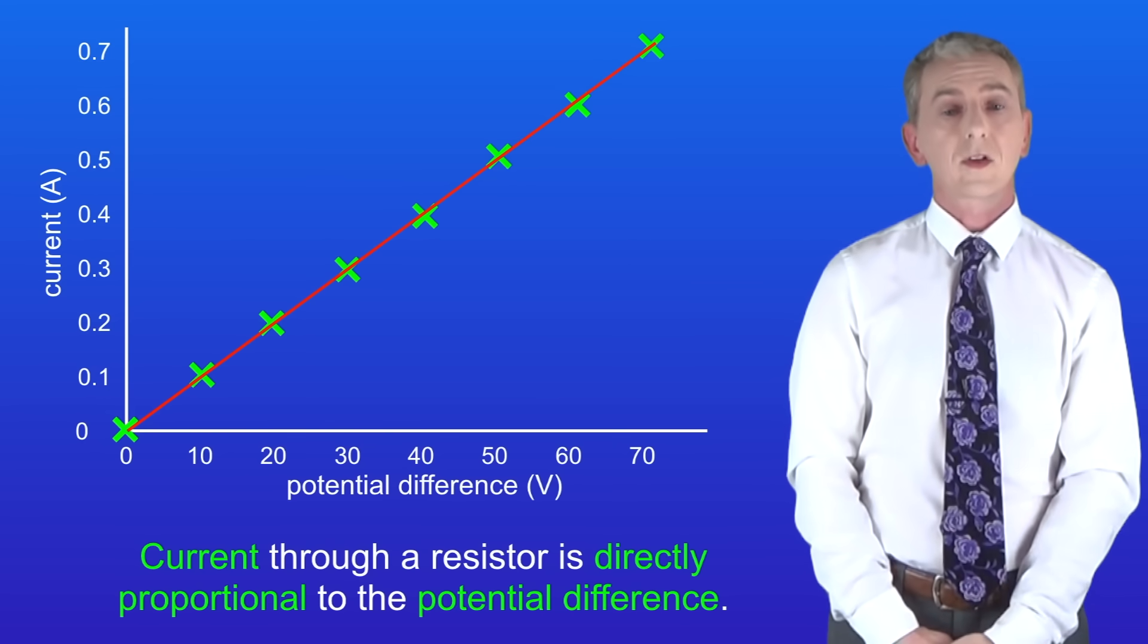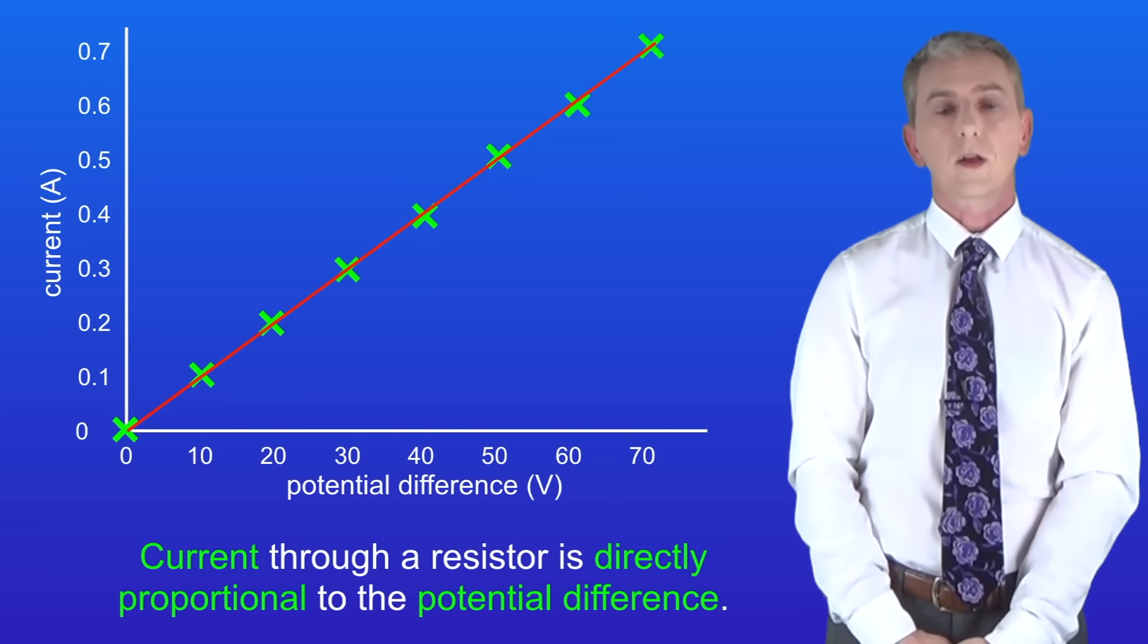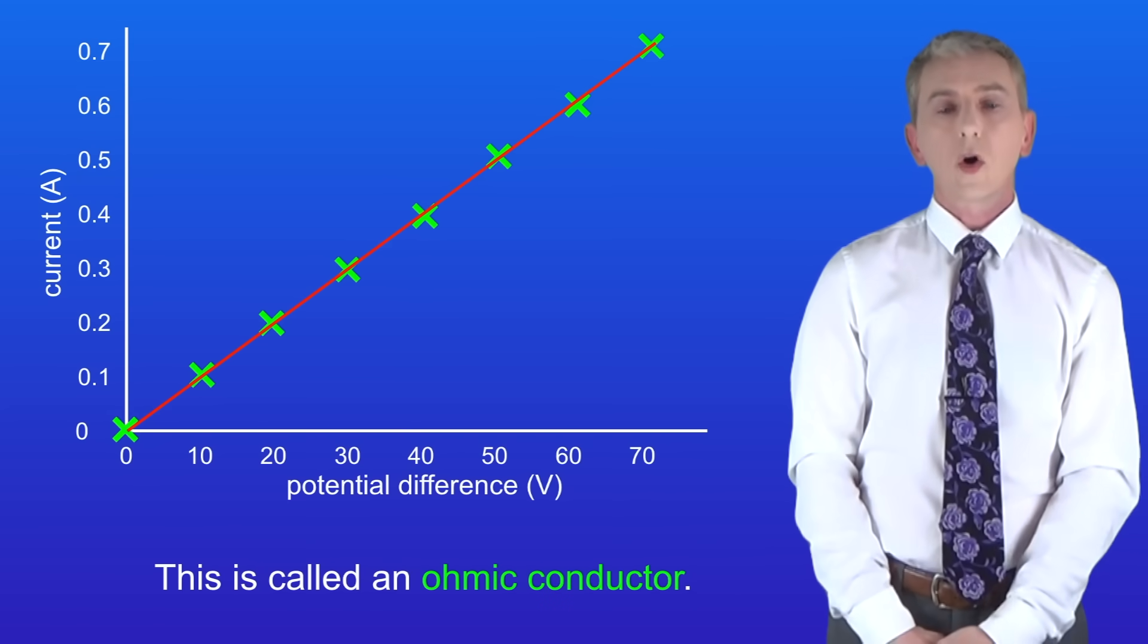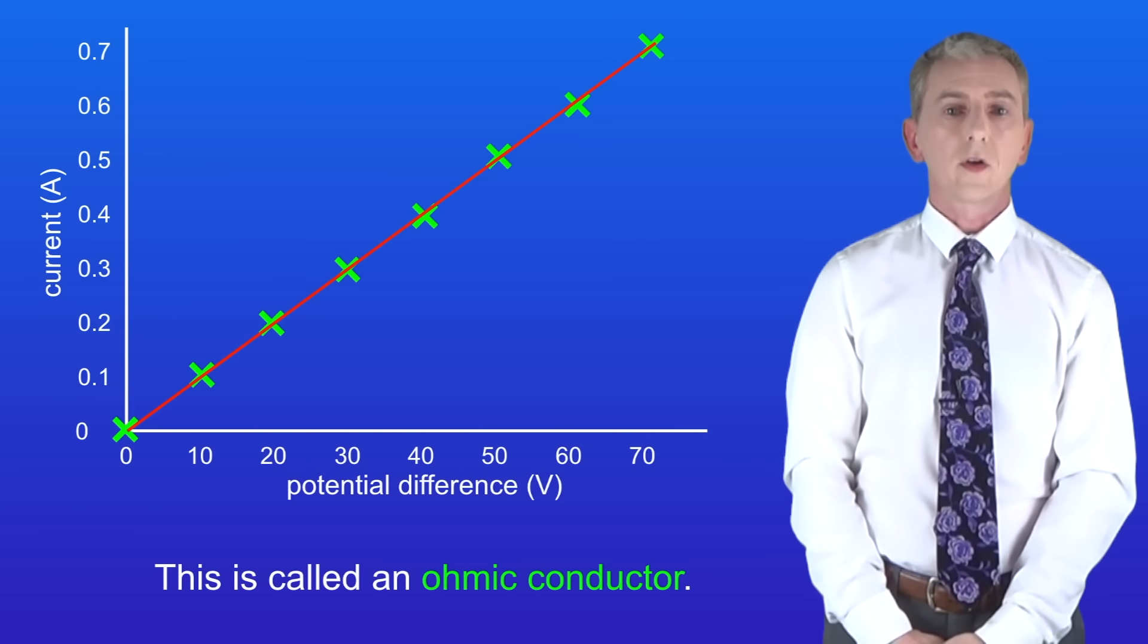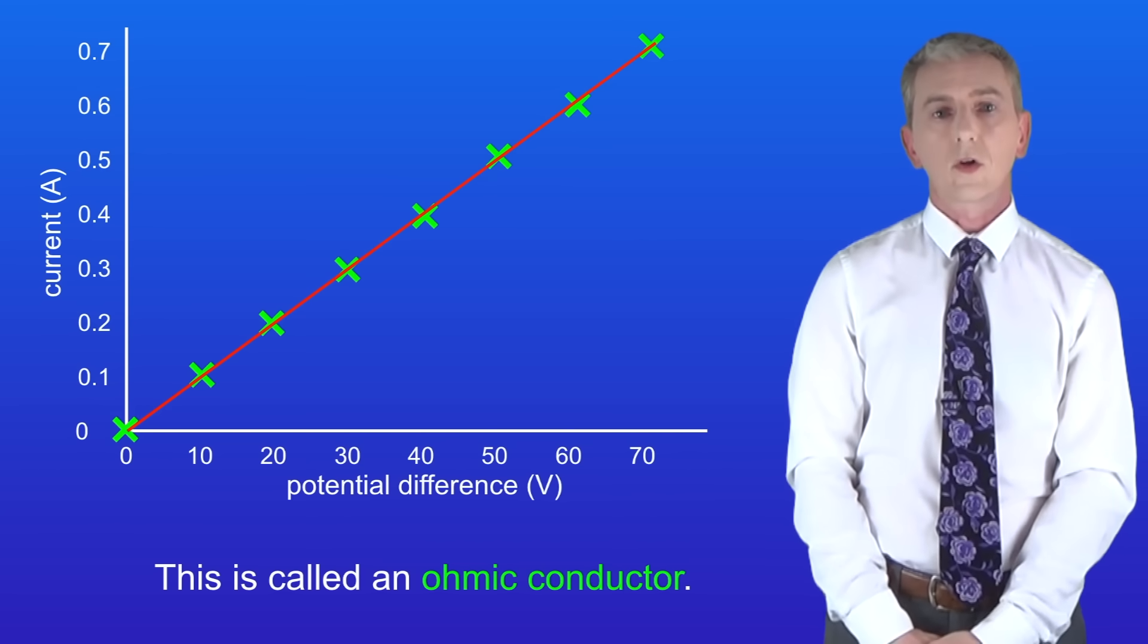The current through a resistor is directly proportional to the potential difference across the resistor. In other words the resistance is constant. We call resistors such as these ohmic conductors. Remember though that this only applies if the temperature does not change.